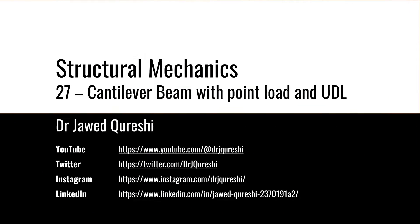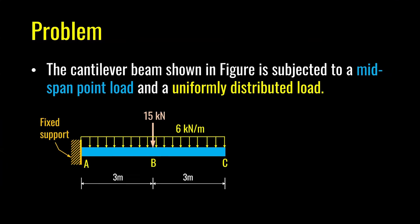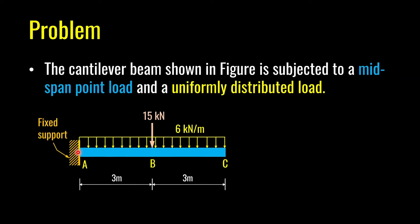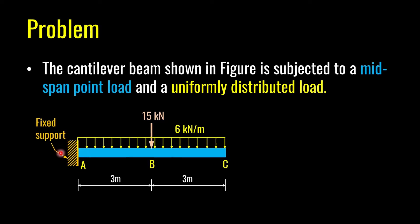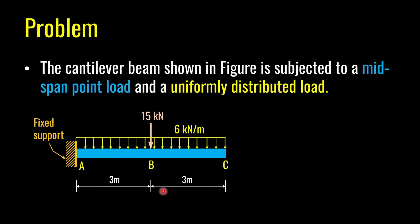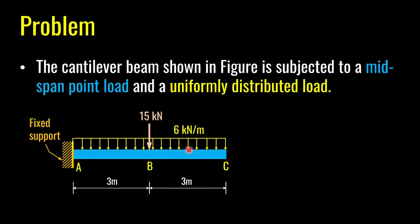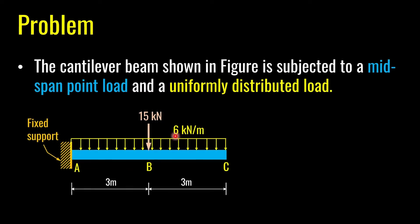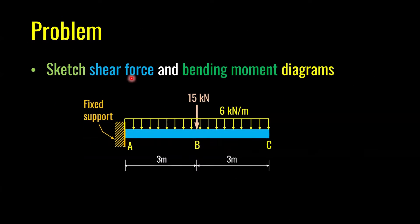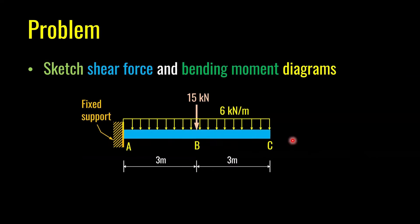In today's lecture, I'm going to talk about cantilever beam with point load and UDL. The problem which I want to solve today is this one. This is the cantilever beam with the fixed support at the end. It's a 6 meter beam. A mid-span point load of 15 kN is applied. A uniformly distributed load of 6 kN per meter is applied here as well. We have to sketch its shear force and bending moment diagram.